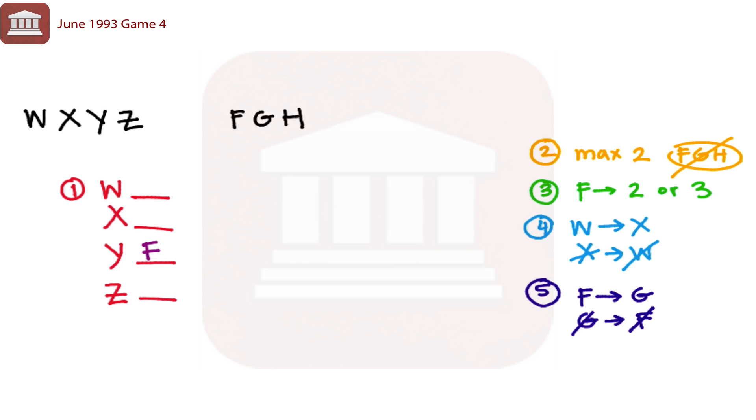Okay, so we know for rule number five, if it responds to F, then it's going to respond to G. And we know that it can't respond to all three antibiotics, so that's it for Y. And so we know one of the two or three that F is going to respond to is done.